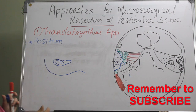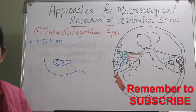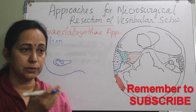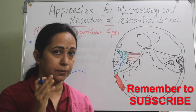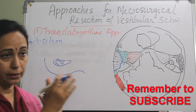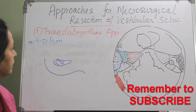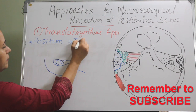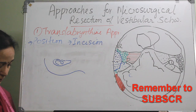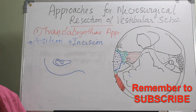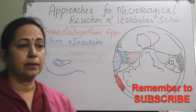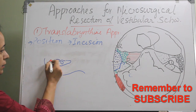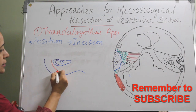The surgery is done under general anesthesia. Patient positioning is similar to any ear surgery: the patient is supine with the head turned to the opposite side so that the operated side comes up. The incision is again a post-aural incision, but it is further posterior to the post-aural crease, forming a C-shaped incision.